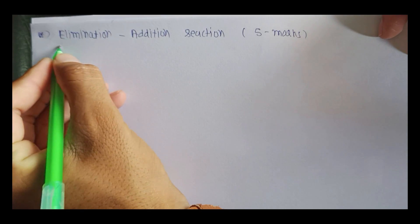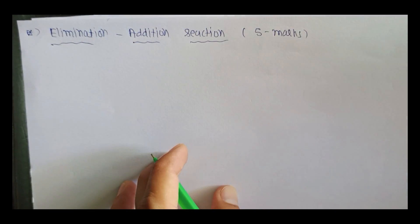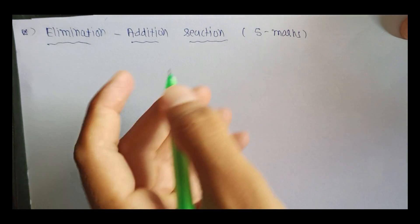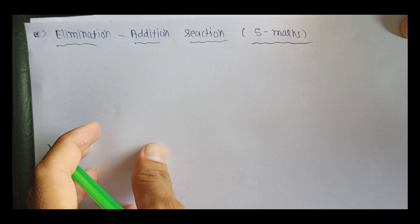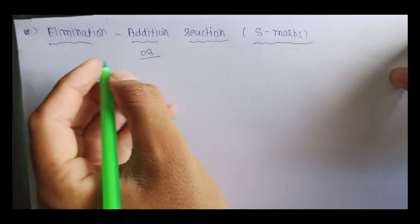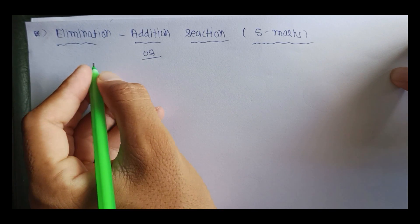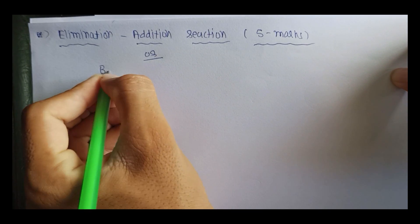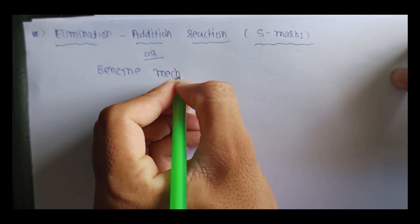Chapter: Elimination Addition Reaction is our last topic of this chapter. This is the most important question for the external exam — a 5-marks question on Elimination Addition Reaction. This is also a question on Benzyne Mechanism.